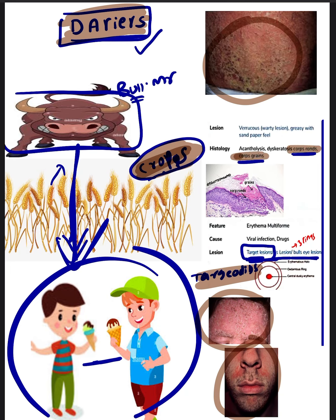You will see crop prawns or crop grains. You can easily remember these are the grains from the crops. Crop grains or crop prawns will be seen in Darier's disease, whereas brick wall appearance is seen in Hailey disease. Now see how warty these lesions are, how dirty these lesions are. Warty lesions, grease-like lesions, sandpaper-like rough lesions are seen in Darier's disease.